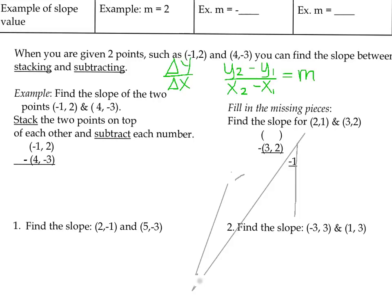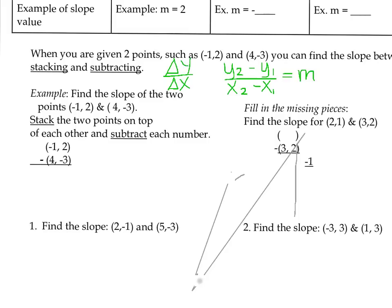Now you're welcome to use the formula, and at the end I will show you an example using only the formula. But what I found is a lot of students have a hard time remembering the formula and then actually plugging it in correctly. So I use a method called stack and subtract. What the stack and subtract method does is you take your two points and you put them on top of each other. So you stack the two points on top of each other, and then you subtract each number. Remember when we subtract, we're going to change the signs. So I'm going to change that to a negative 4 and then a positive 3.